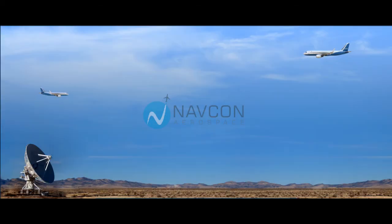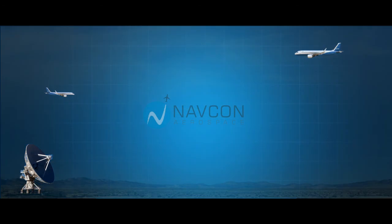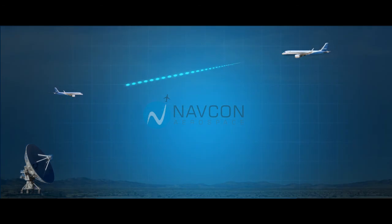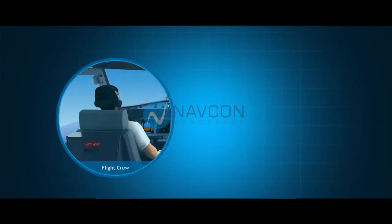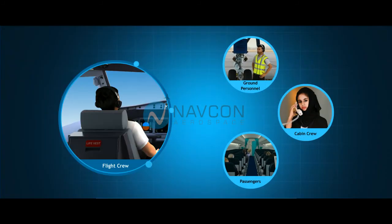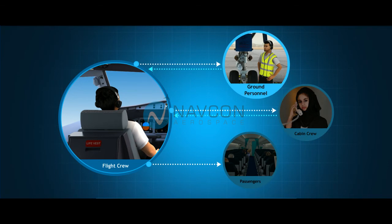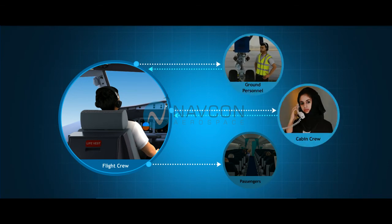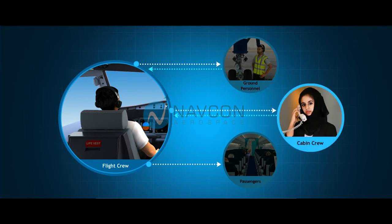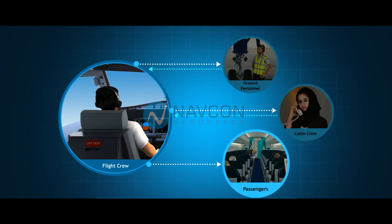The aircraft's communication system allows the flight crew to communicate with ground stations and other aircraft. The communication system also allows the flight crew to communicate with ground personnel, the cabin crew, and passengers.